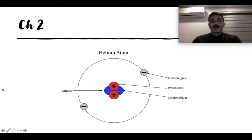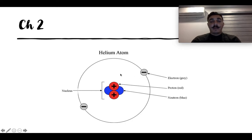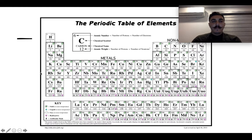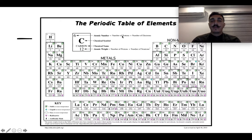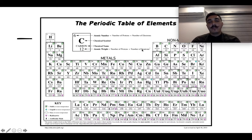If you remember, this could be an element — this is a helium atom. We've got our protons in red, neutrons in blue, and electrons on the outside in gray. In the periodic table, the atomic number gives us the number of protons and electrons, while the atomic mass gives us the number of protons plus neutrons.